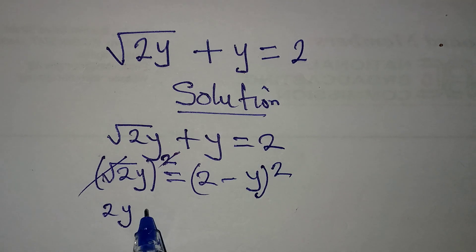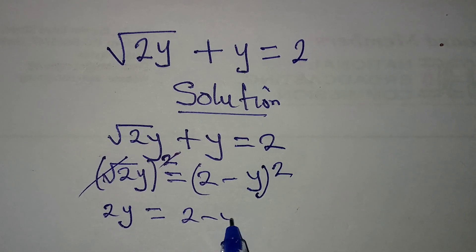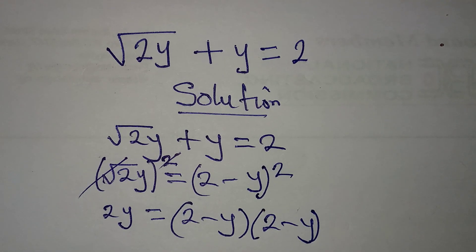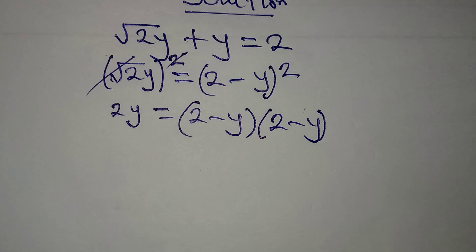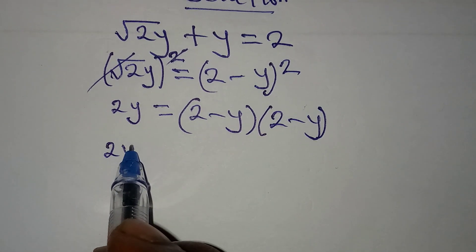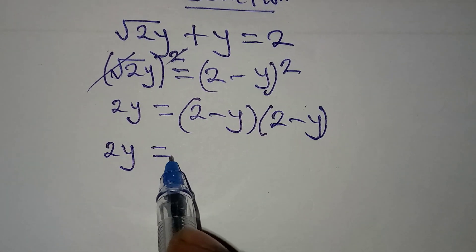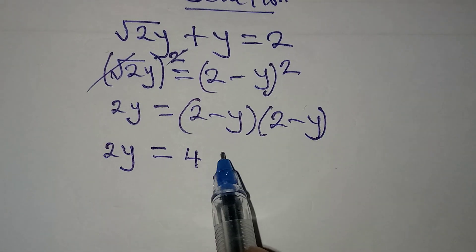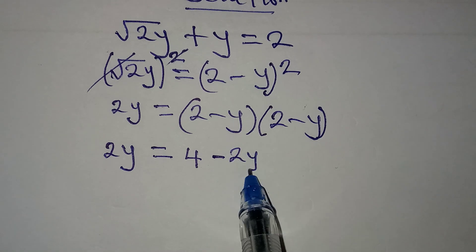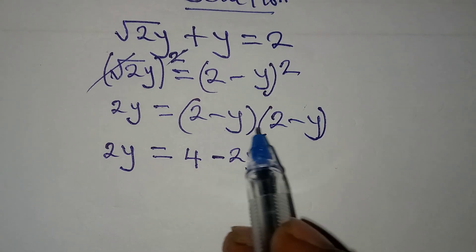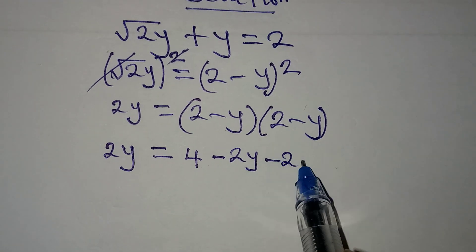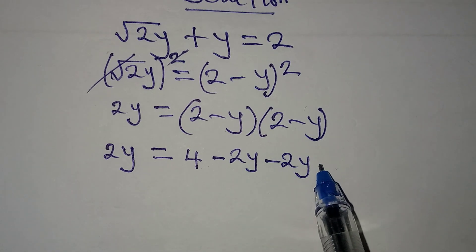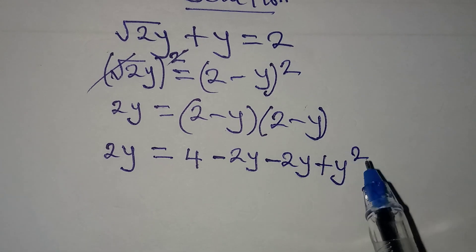Now let's open the brackets. 2y here will be equal to 2 times 2, which gives 4, then 2 times -y, that is -2y, then -y times 2, that will give -2y, then -y times -y will give plus y squared.